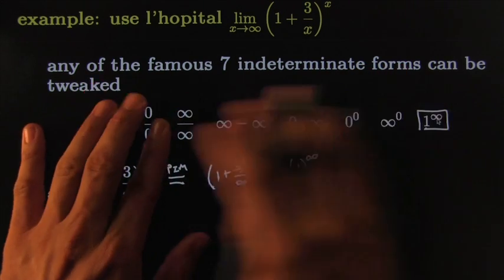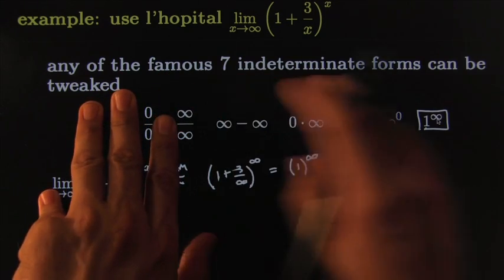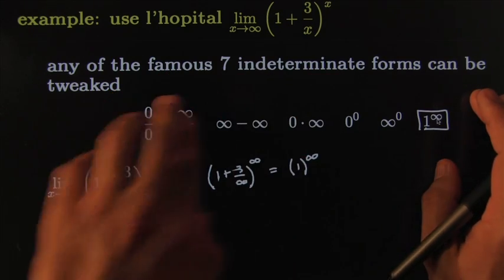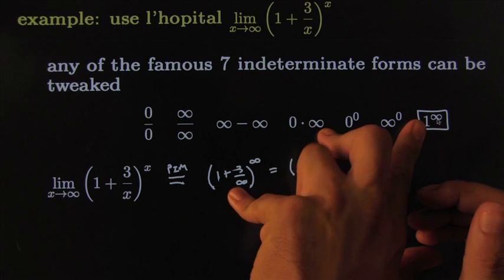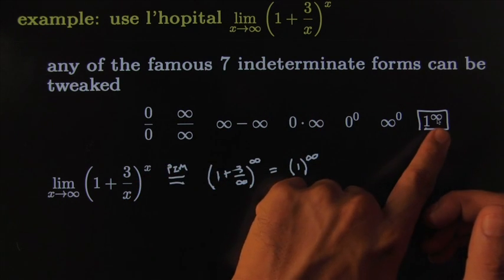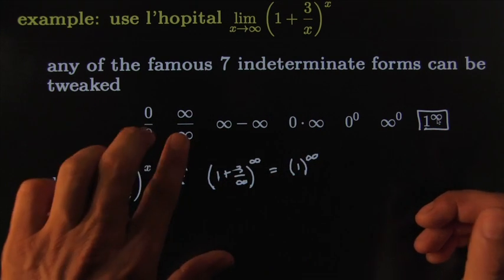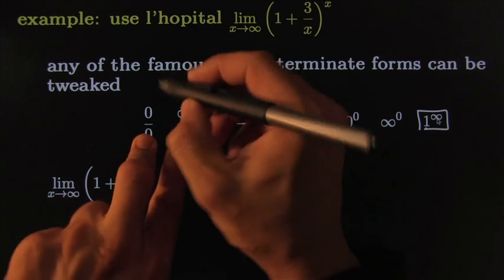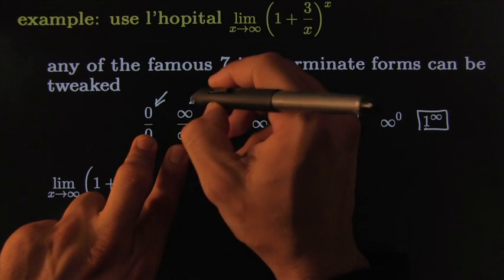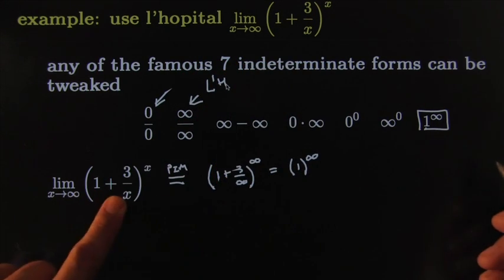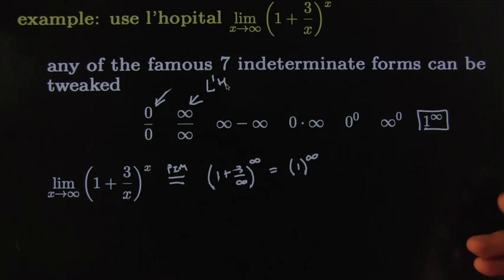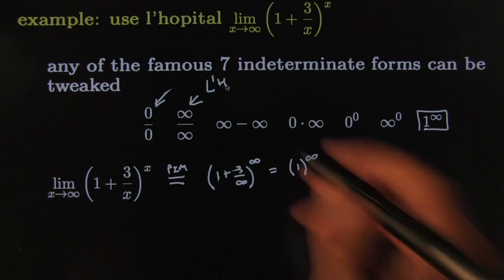Now what was the promise that we said? We said any of the famous indeterminate forms can always be tweaked using your excellent algebra skills and your three-and-a-half pound brain — you can always tweak it to become one of the forms we like. Why? Because this is L'Hôpital land. So the idea is to tweak this one using your algebra skills. It's pretty easy. Let's do it.